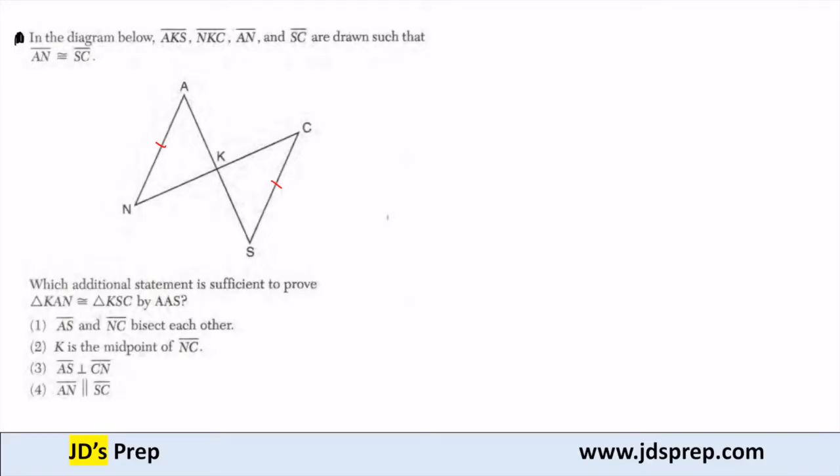Which additional statement is sufficient to prove that triangle KAN is congruent to triangle KSC by angle-angle side? We already have the side taken care of because we know that the sides AN and SC are congruent. So we just need two angles.